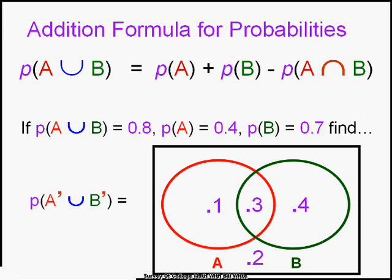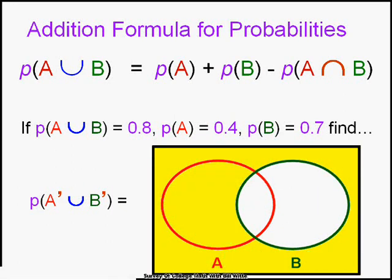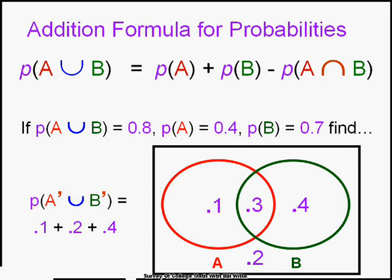Using those same numbers, find P(A'∪B'). A prime is everything but A, and B prime is everything but B. Unioning them together gives us everything except the intersection. So add up 0.1 + 0.4 + 0.2, or subtract the intersection 0.3 from 1, and you get 0.7. We can do all kinds of manipulations — in real problems people ask about events not happening, and we put it in union and intersection language, then apply these principles.